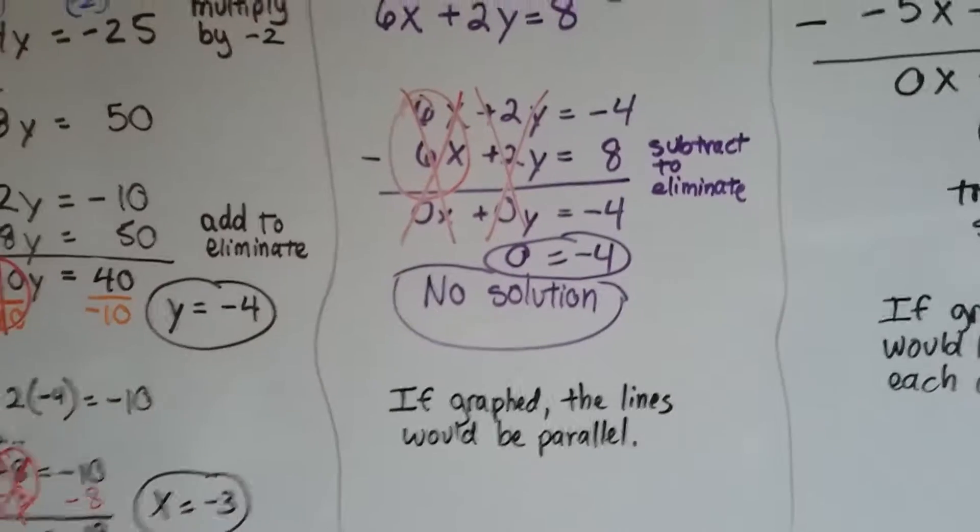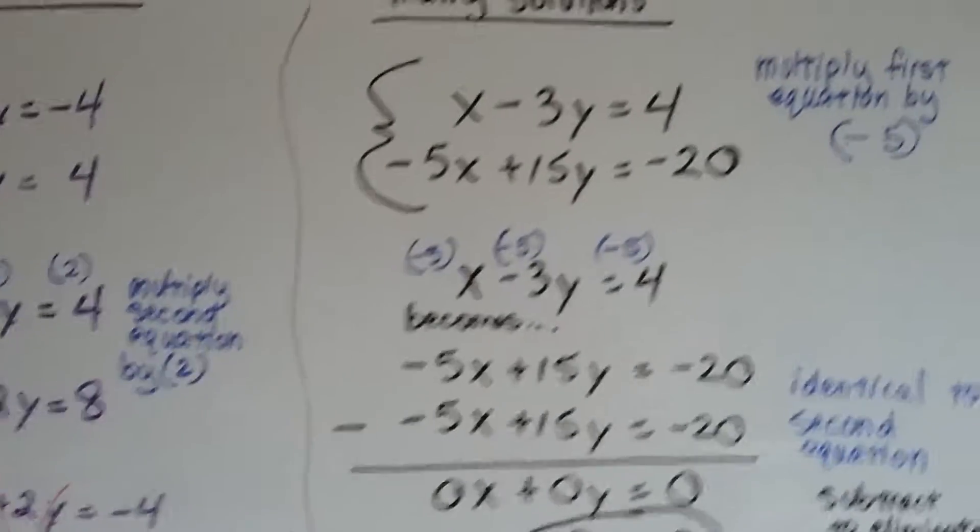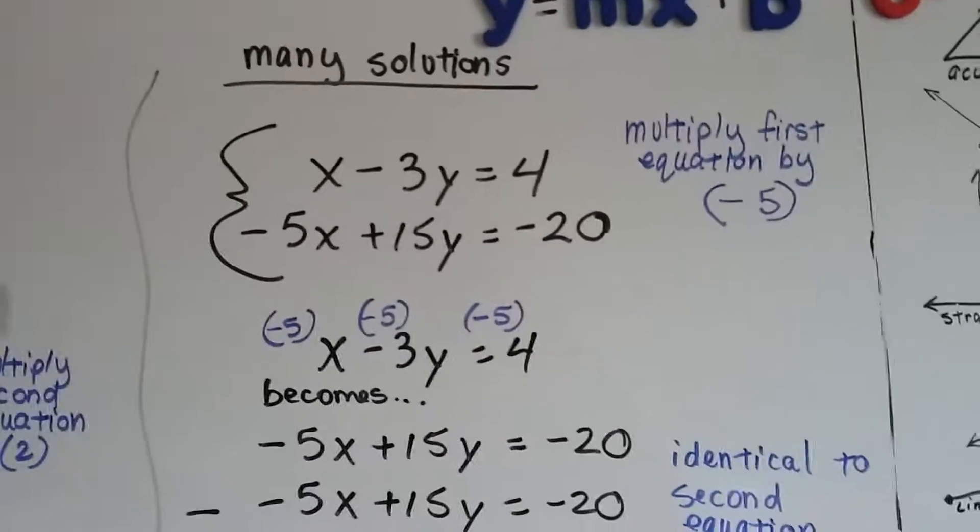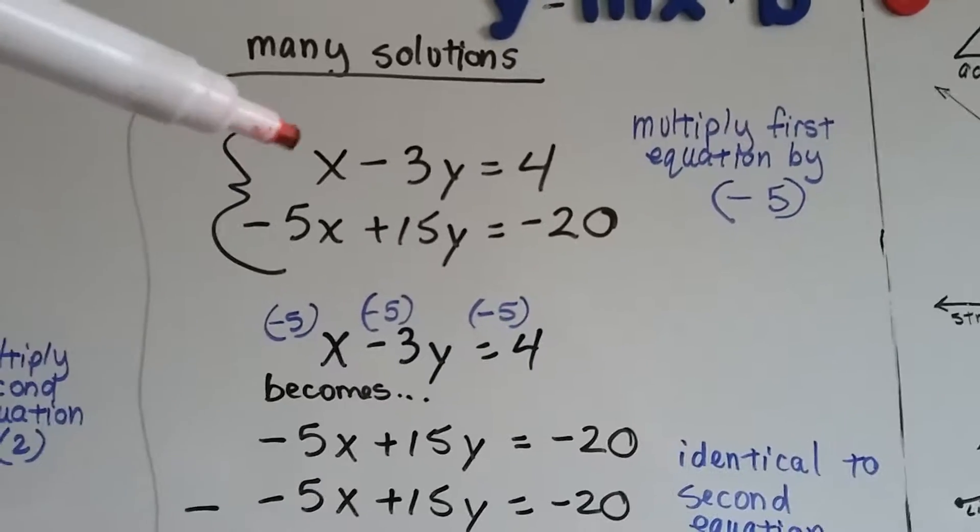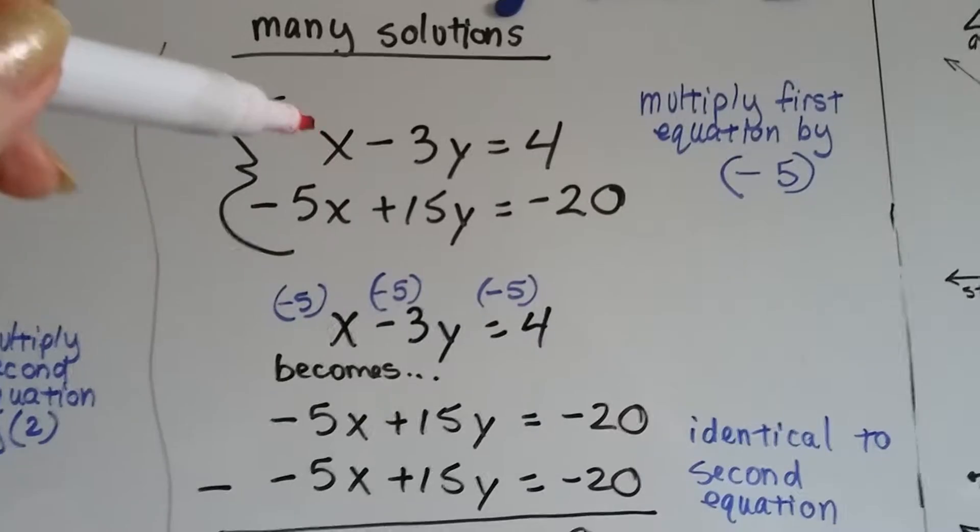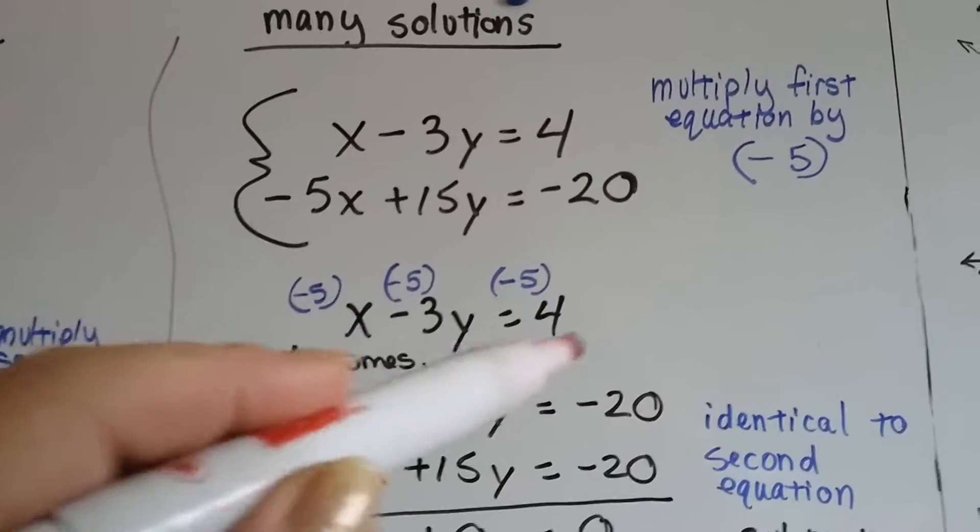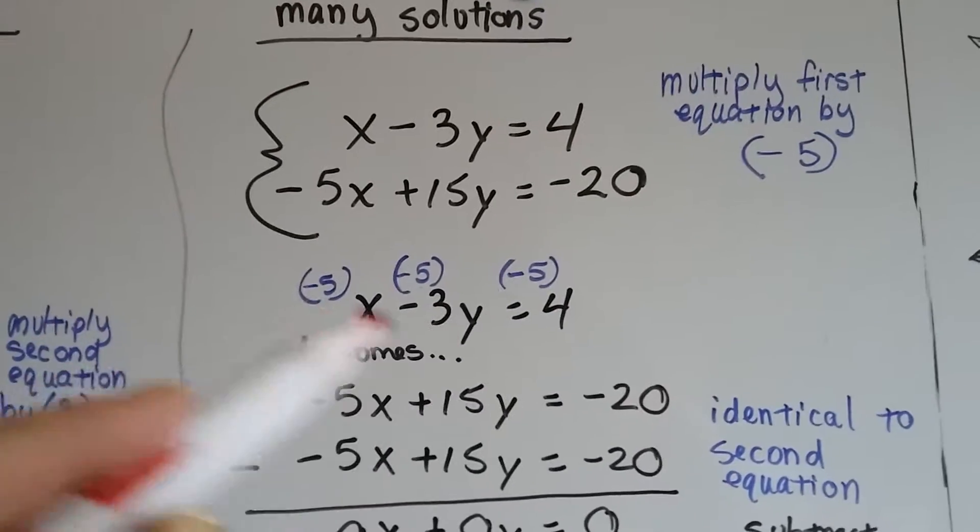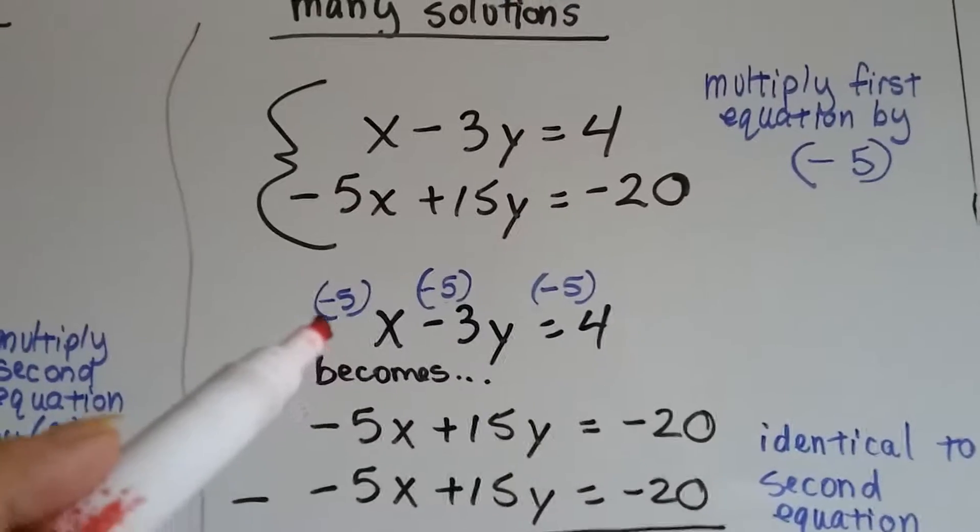Let's look at this one. This one's going to have many solutions. The first thing I'll do is multiply this first equation by negative 5 to get these to match.